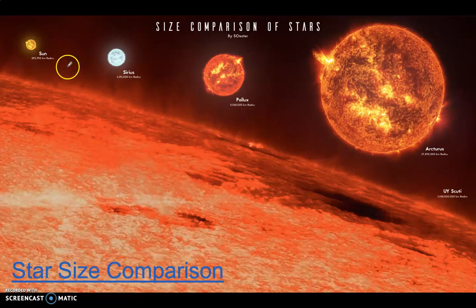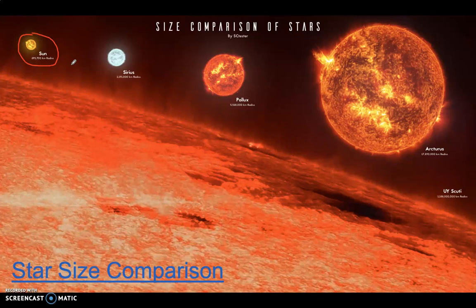Now our Sun is a main sequence star. It's a very ordinary star. There are actually stars that are far, far, far larger than our Sun. And this video down here, star size comparison, will I think blow your mind. So it's worth going back and loading up my PowerPoint, clicking on this link and hurting your brain a bit with just how big a star can get.